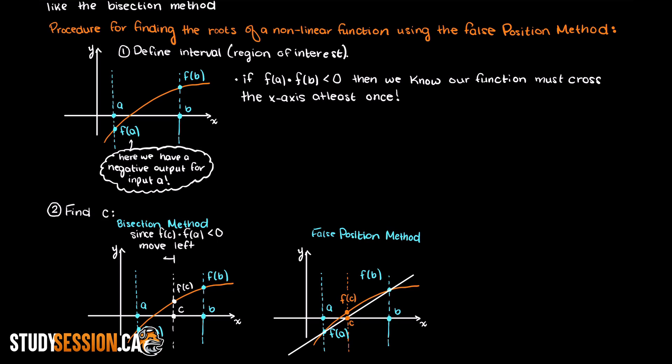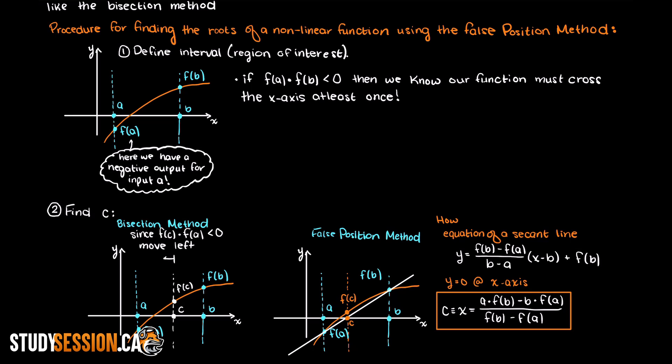But how do we find this c-value? Well, let's remember the equation for a secant line. That is, a line that passes through two points is the following. We also know that at our root, y is always going to be zero, as we are on the x-axis. Therefore we can always find our c-value through the following formula.